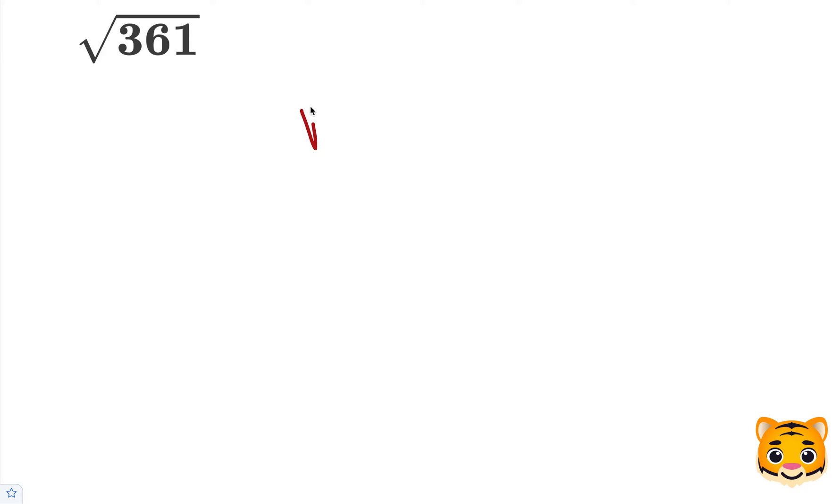361 is an example of a perfect square. A perfect square is a value where if you take the square root of that perfect square, you end up obtaining a whole number value as your solution.